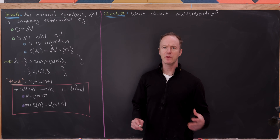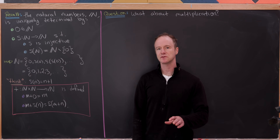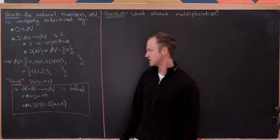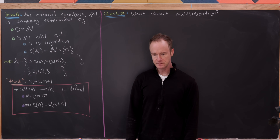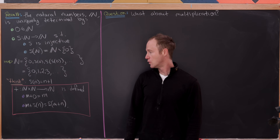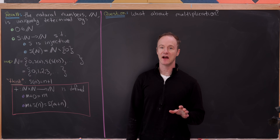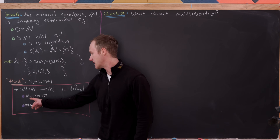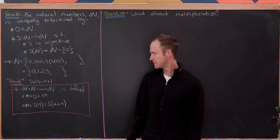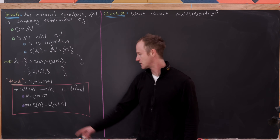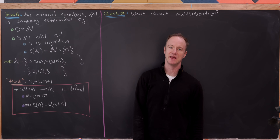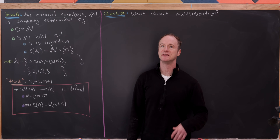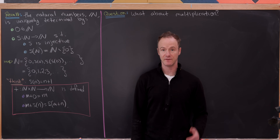How do we really want to think about this function s? Well, it's the so-called successor function. We'd like to think that s of n is equal to n plus one. Now that we have that setup, we can recursively define addition between any two natural numbers by saying that m plus zero is equal to m, and then m plus s of n is equal to s of m plus n. We did this in a previous video and showed that addition was commutative and associative based off of this setup.